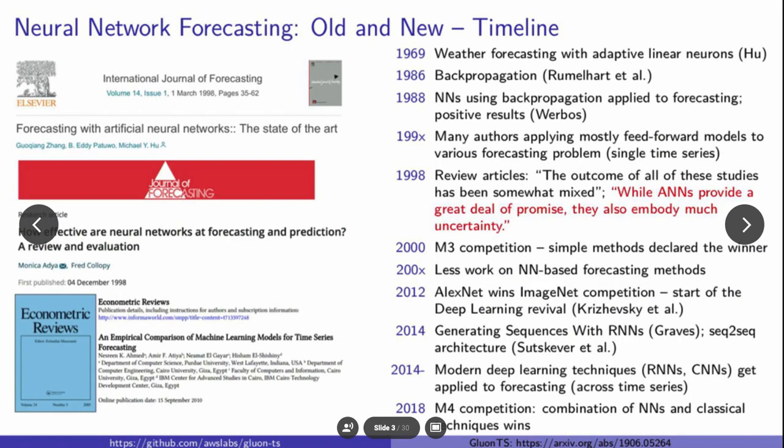A little bit about the history of how neural networks have interacted with forecasting. Surprisingly, even in the late 60s to late 80s, we see neural networks methods being applied in forecasting, except in this case, it's for single time series. What happens in the late 90s is we see that the results seem a bit mixed.